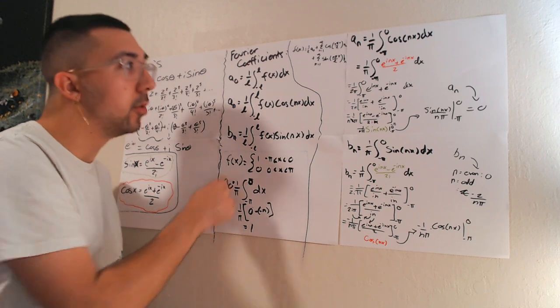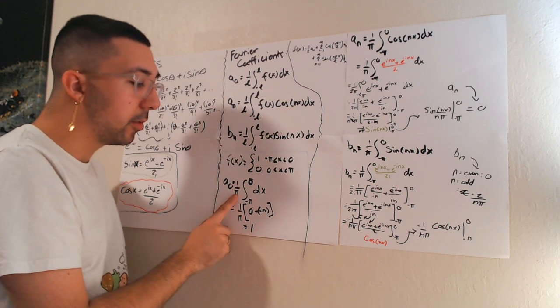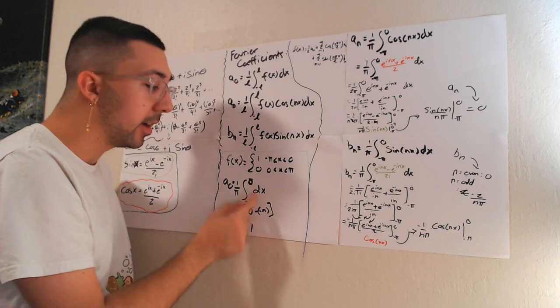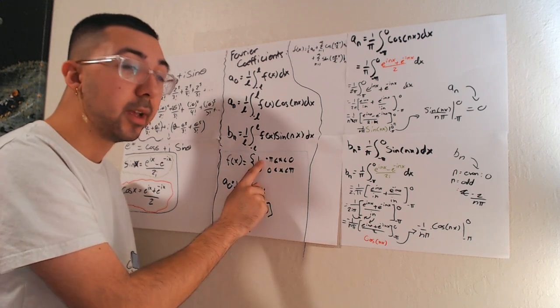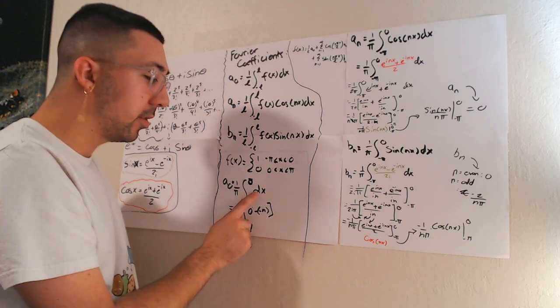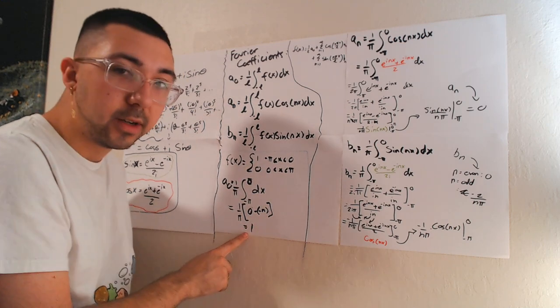A sub not is really simple. We just do the integral 1 over pi, from negative pi to 0, because that is the only place where the function is actually able to be integrated from. So we do negative pi to 0 dx, and we're going to get 1 for a sub not.